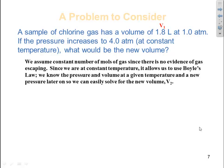Let's call 1.8 liters volume 1. We will call 1.0 atm as pressure 1, so these are our initial conditions. Then later on, we measure that pressure 2 is 4.0 atm, so the pressure has changed. What we are trying to find now is the new volume, volume 2.